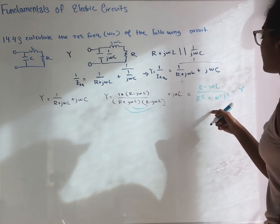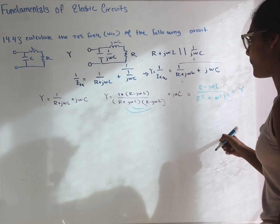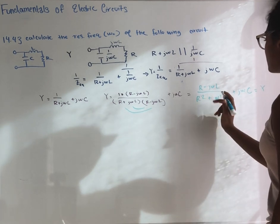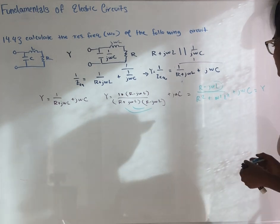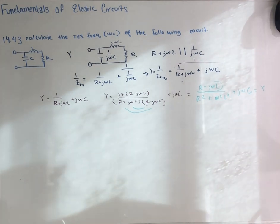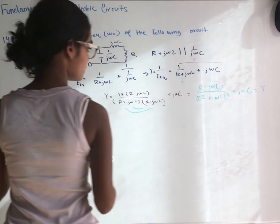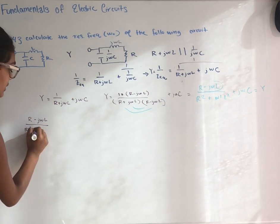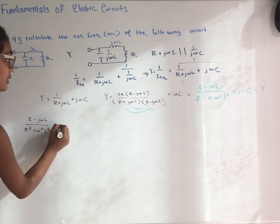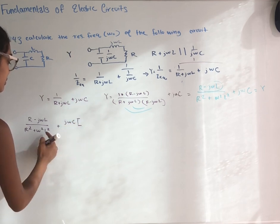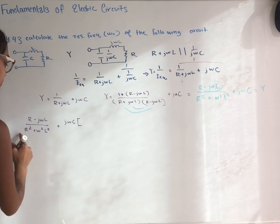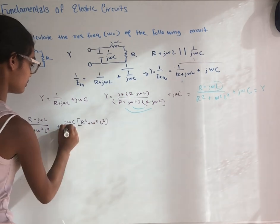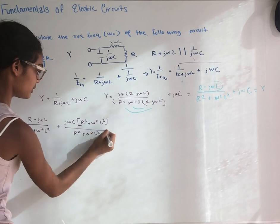We can now identify which part is imaginary. To combine terms, we need the same denominator for both, so we multiply j omega C by (R squared plus omega squared L squared) over (R squared plus omega squared L squared). This gives (R minus j omega L) over (R squared plus omega squared L squared) plus j omega C times (R squared plus omega squared L squared) over (R squared plus omega squared L squared) equals Y.